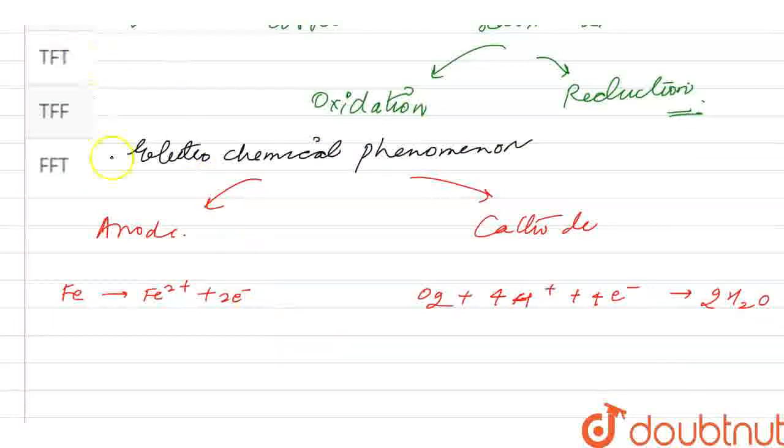then overall reaction will be given: 2Fe plus O2 plus 4H+ gives 2Fe2+. What is my overall reaction for this process?